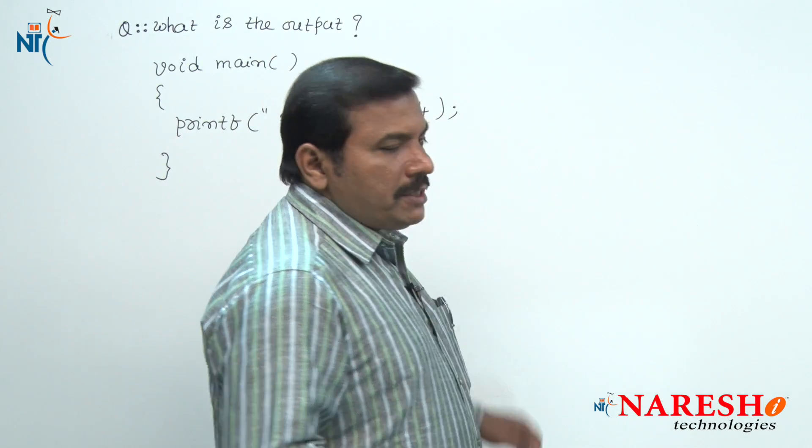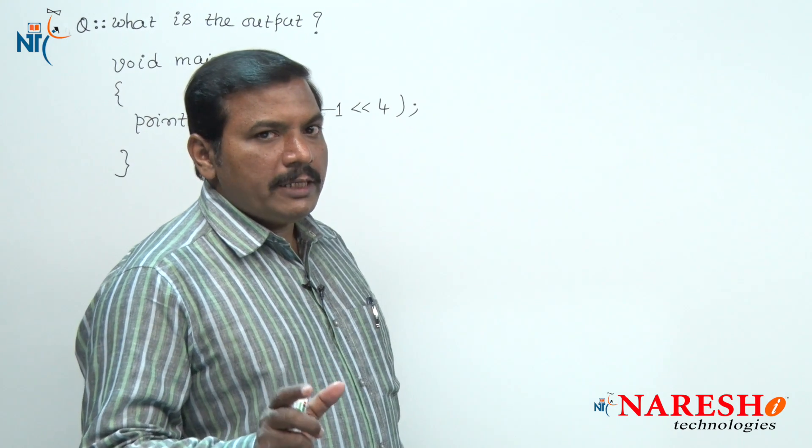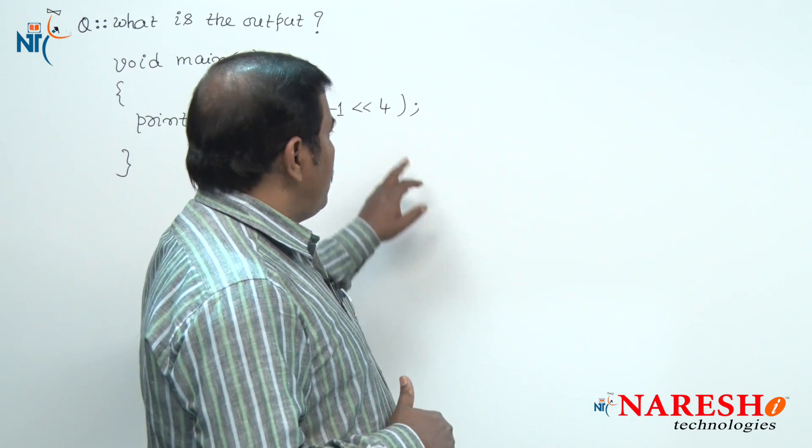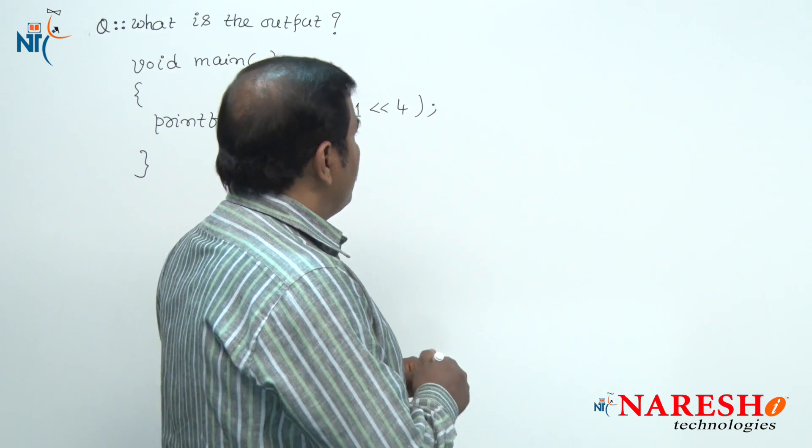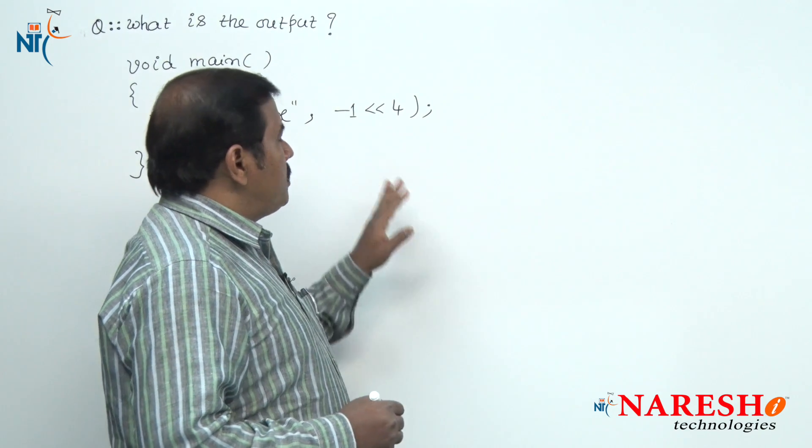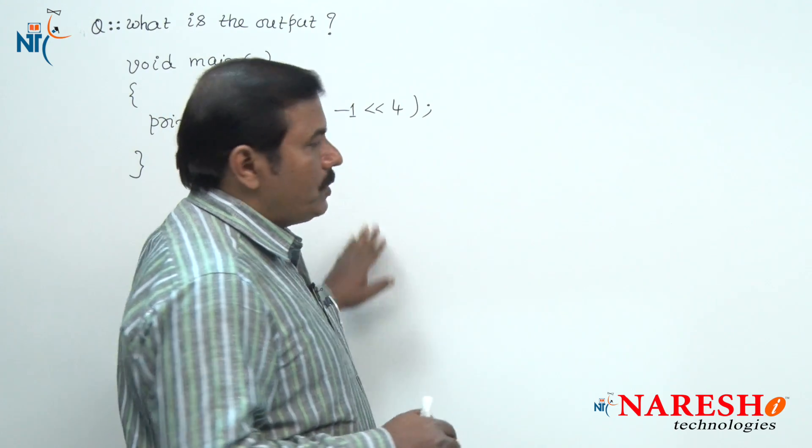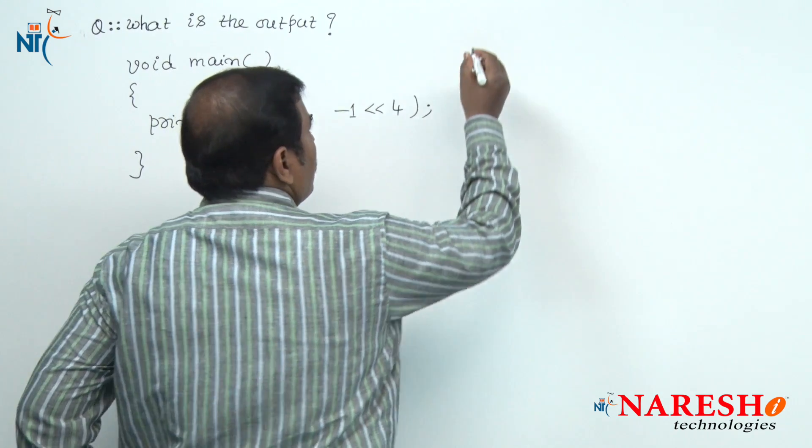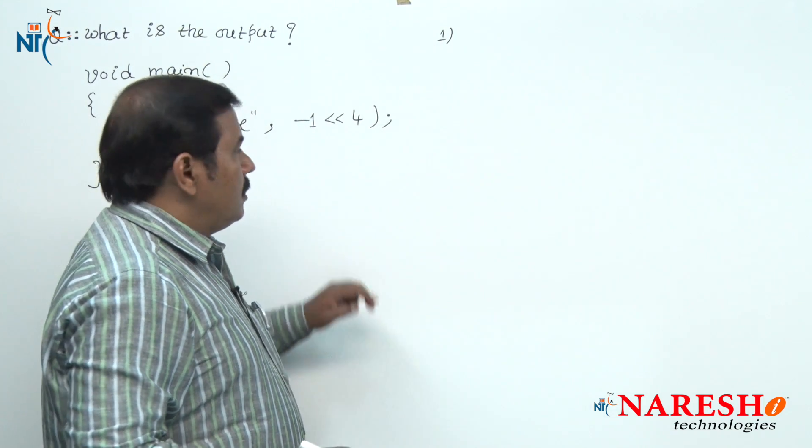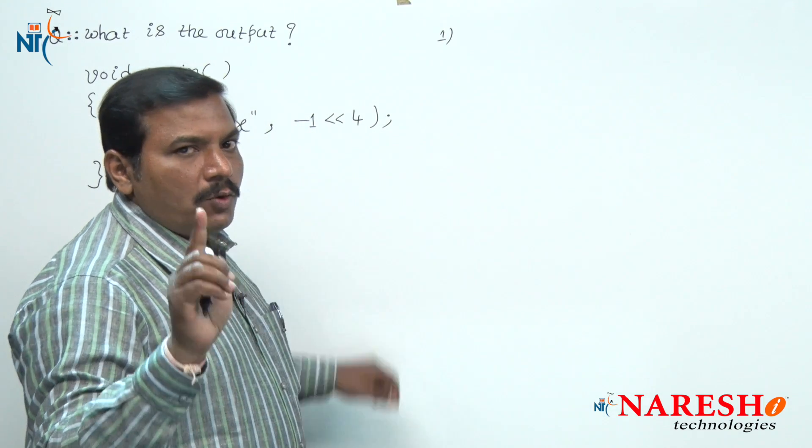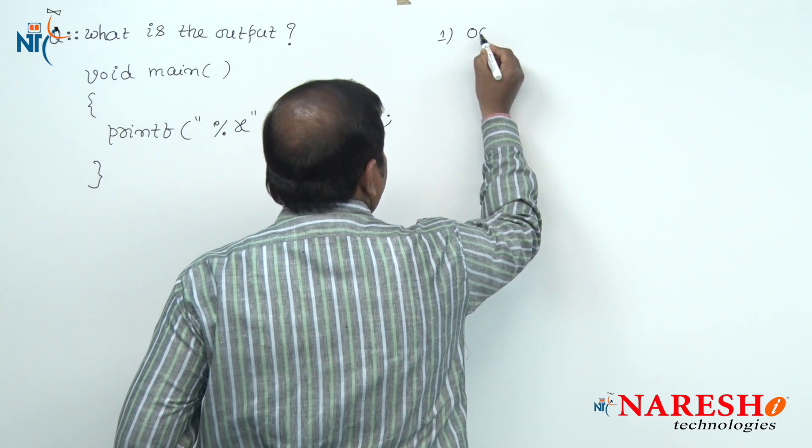Let us first evaluate 2's complement of the negative number minus 1 and then on that binary data apply this left shift operator. Let us watch the procedure of evaluating 2's complement of minus 1. Step number 1: write the 16 bit binary code of 1. This is the 16 bit binary code of 1.